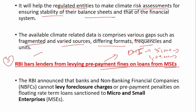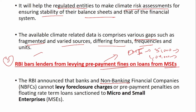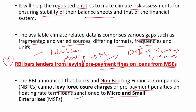RBI announced that banks and NBFCs cannot levy foreclosure charges or prepayment penalty on floating rate term loans sanctioned to MSEs. Currently, if you have been provided a retail loan with a floating rate — for example, housing loans are mostly floating rate retail loans — if a customer makes a prepayment, the bank should not charge any prepayment fine. This rule already exists for retail loans.